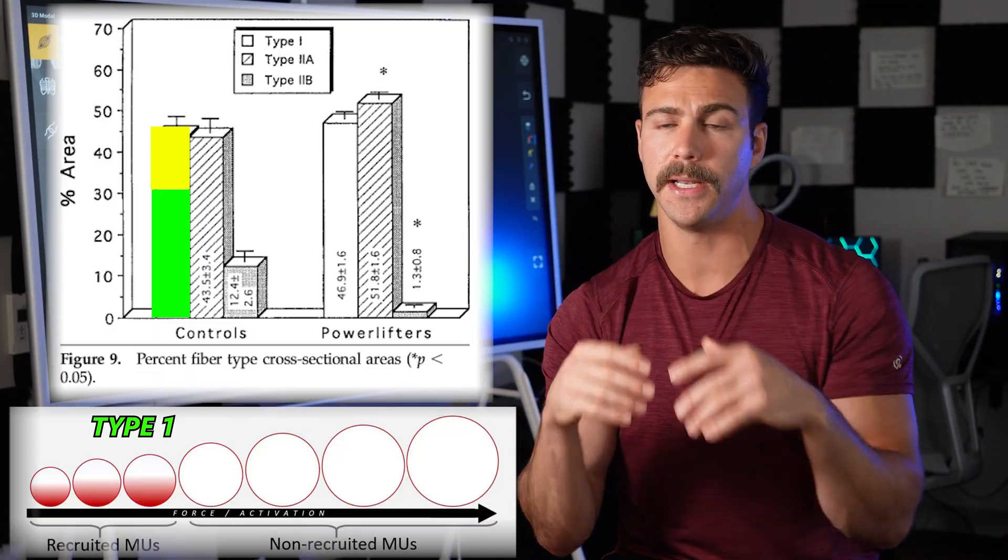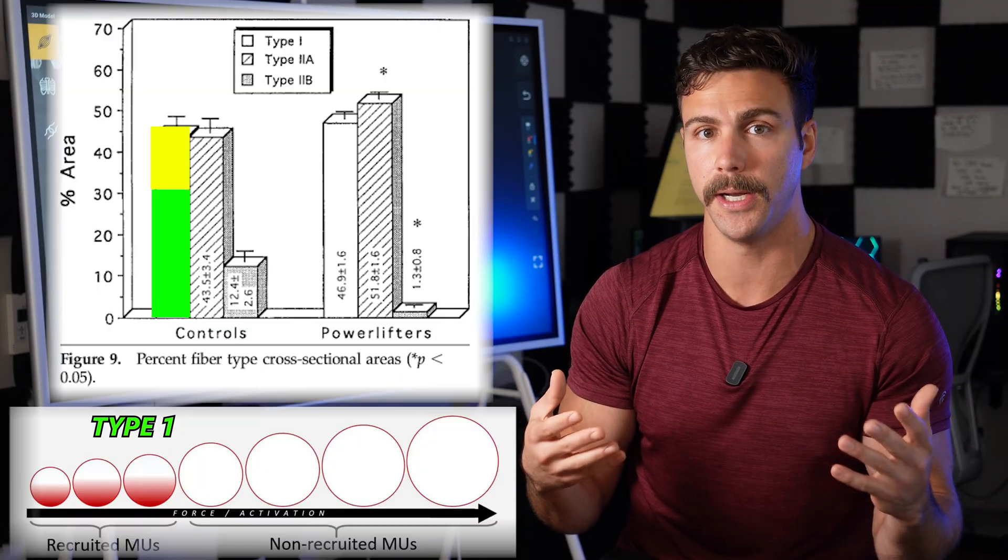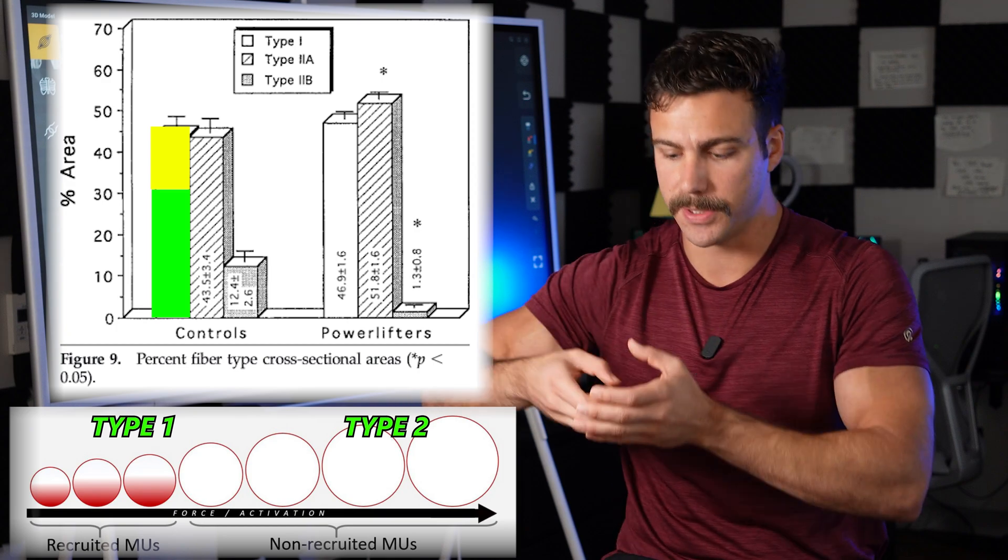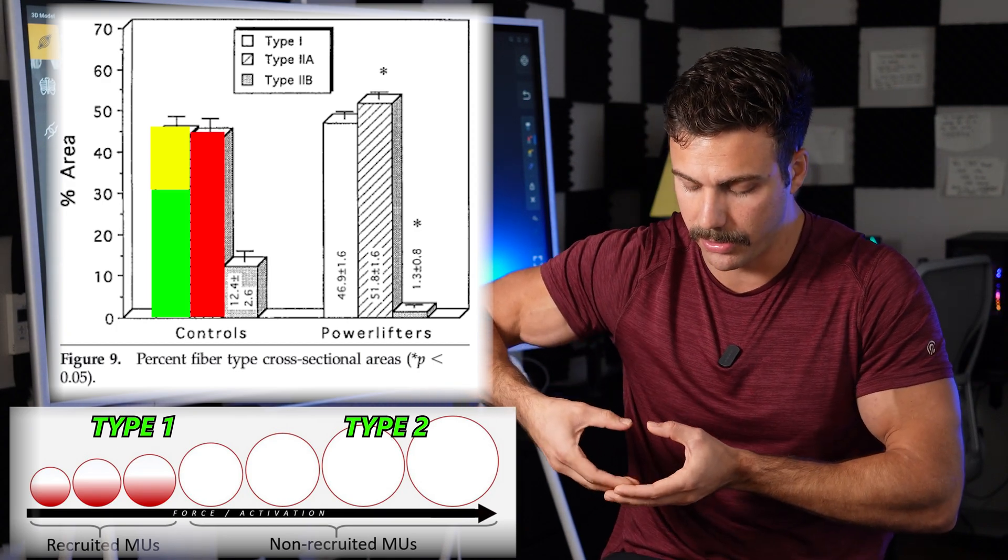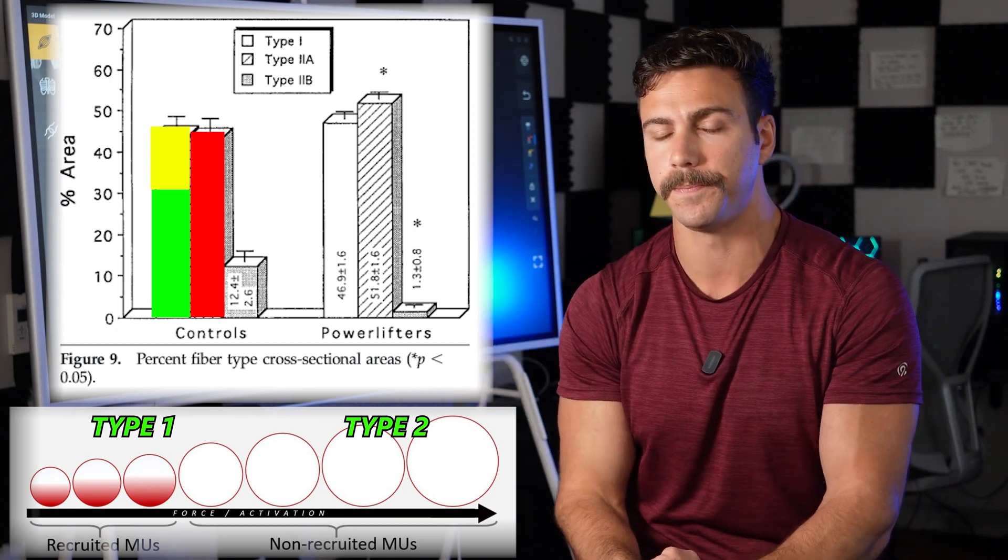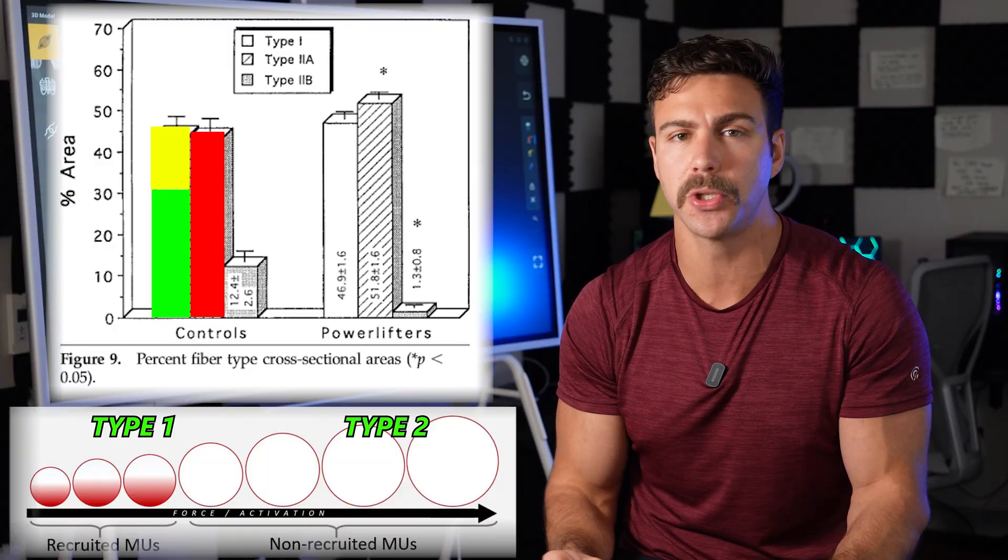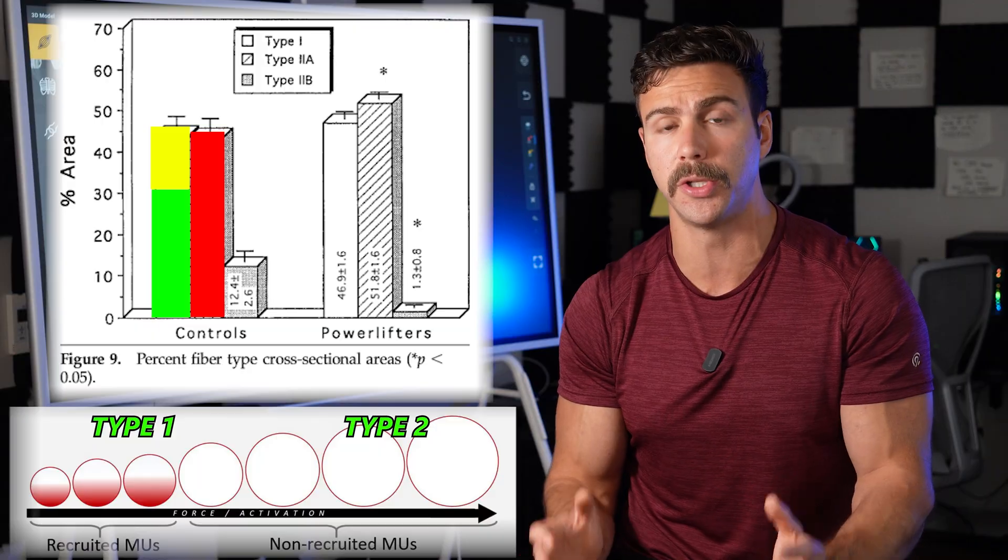Then the next 20% can be grown via training. However, the type 2 fibers are the next 50%, and these are the larger motor units, and they get larger and larger. And these type 2 fibers are where the vast majority of your muscle growth is going to occur.